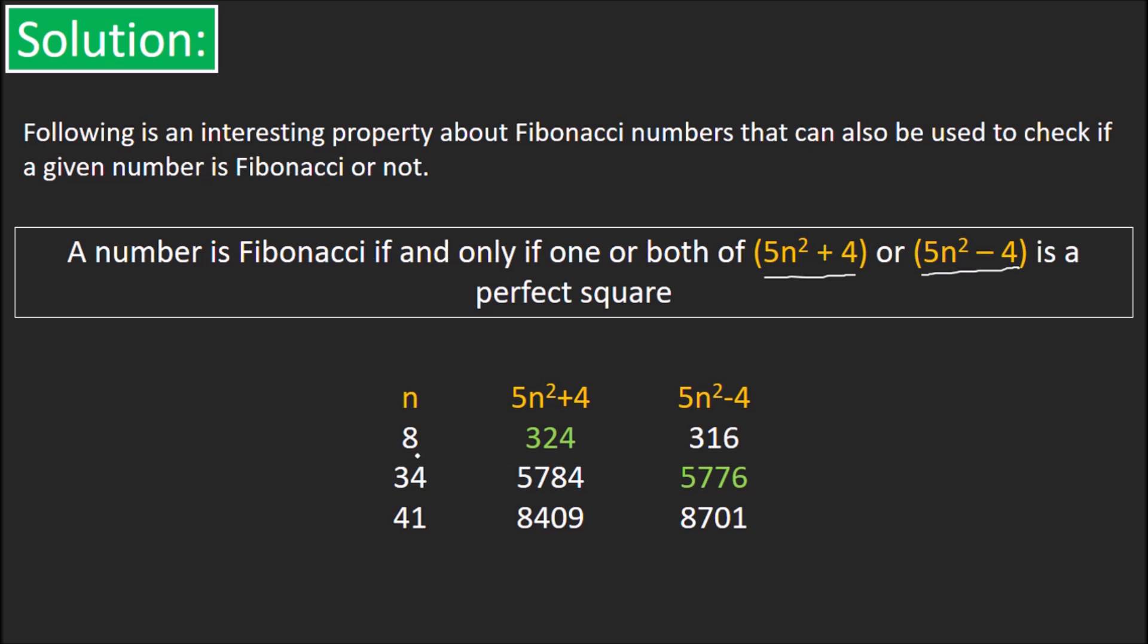So if n is 8, 5n² + 4 is 324 which is a perfect square. For n equal to 34, 5n² - 4 which is 5776 is a perfect square.